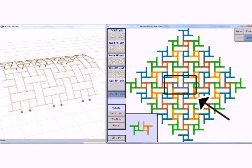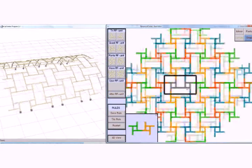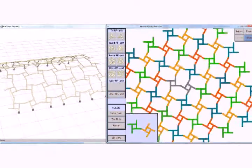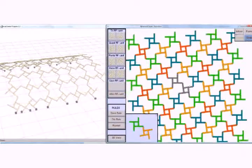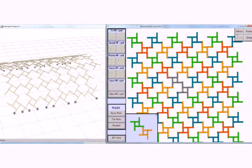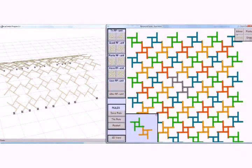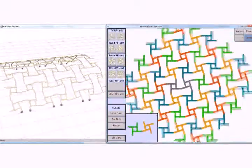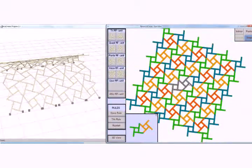For example, here we modify the relative size of the RF units, change the orientations, change the connection types, change the orientations again, and create two point contexts.